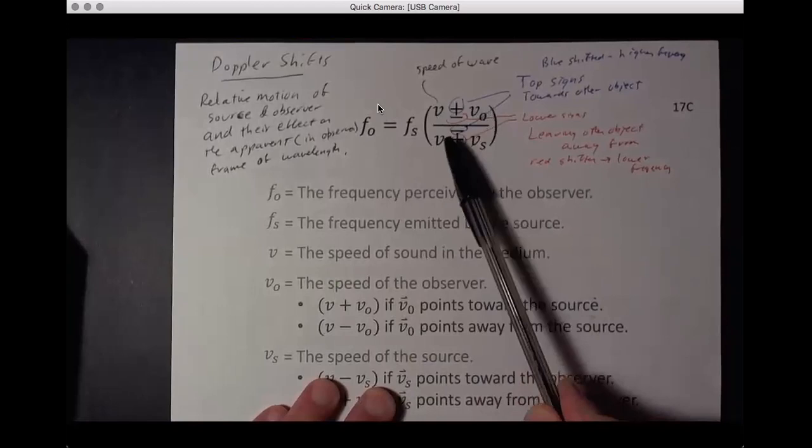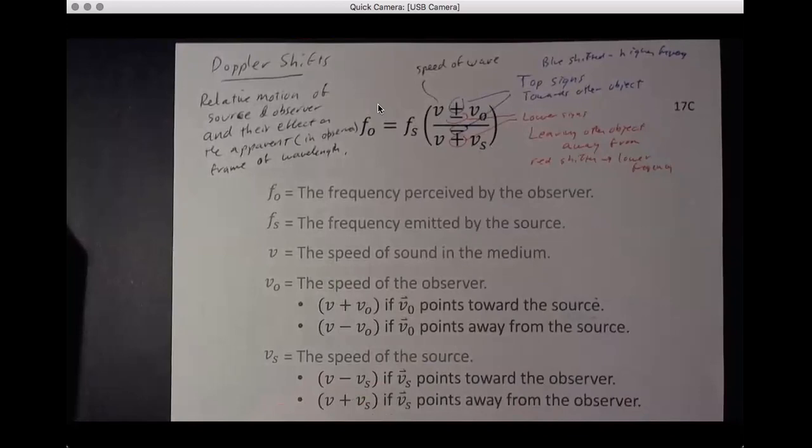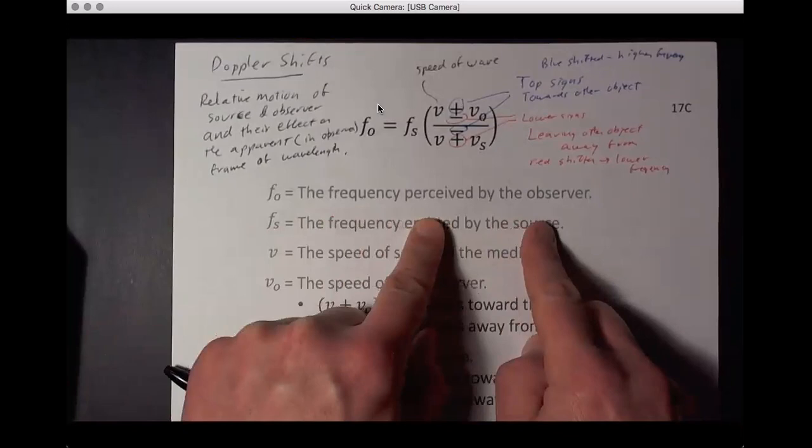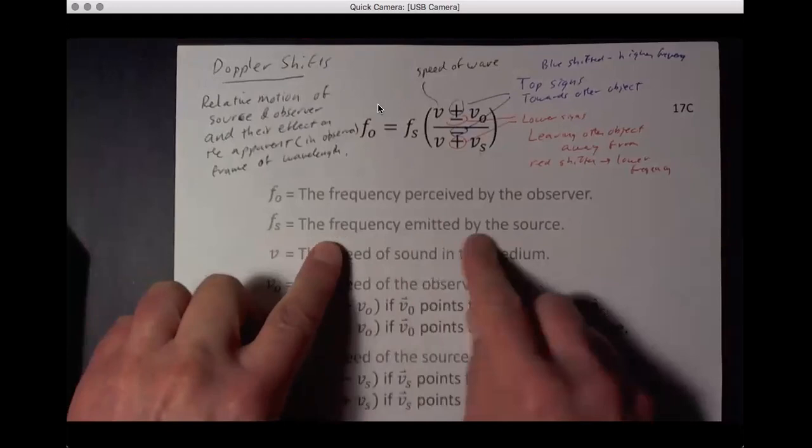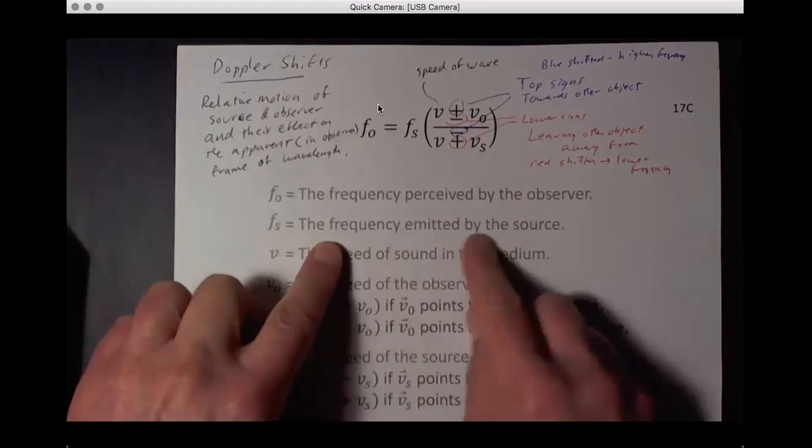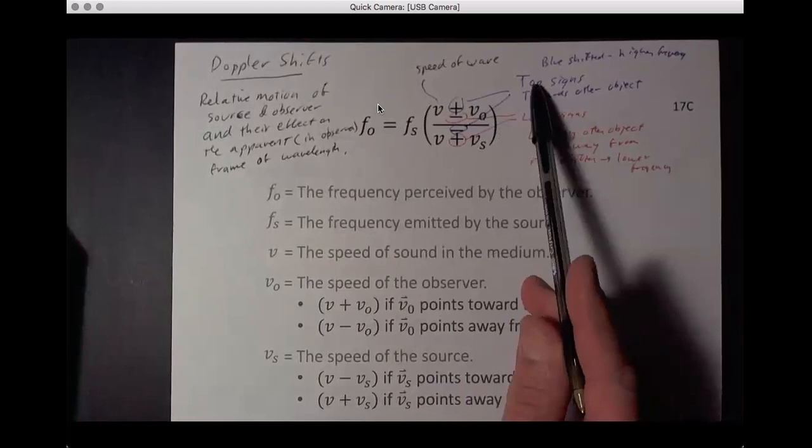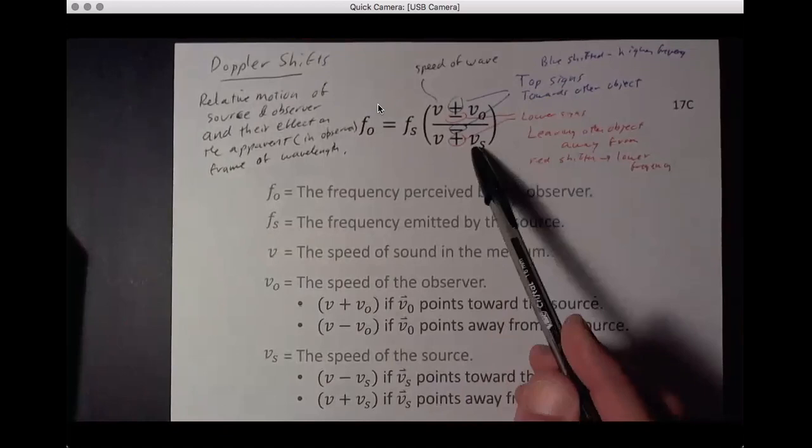Now this formula consists of a scaling of the source frequency as seen by the observer by plus or minus the observer on the top and plus or minus the source on the bottom. Now what you notice is that if the two objects are getting closer together, it doesn't matter which one is moving, both moving, you know, one moving fast and the other. They're getting closer together, frequency is going to be higher. They're getting further apart, one moving, the other moving, both moving, one moving ahead, both moving the same direction but the one in front going faster.